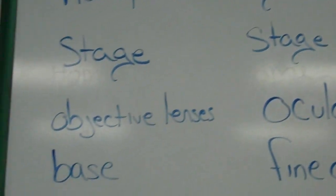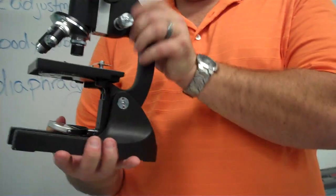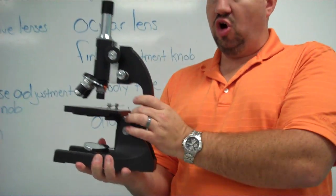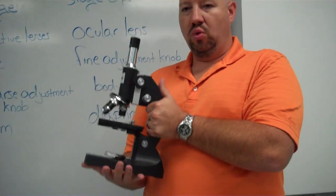When you hold the microscope, you hold it in two hands. The bottom hand is holding what's called the base of the microscope. And the other hand is holding what's called the arm. So when you carry a microscope, it should always be one hand on the arm, one on the base.